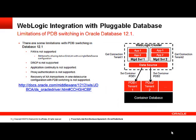In database 12.1, there are some limitations to this implementation of PDB switching. FAN is not supported. Still, the benefits of using Active Grid Link as a single data source are there. DRCP, application continuity, proxy authentication, and recovery of XA transactions are not supported. Please refer to the documentation link to retrieve more information about these limitations.